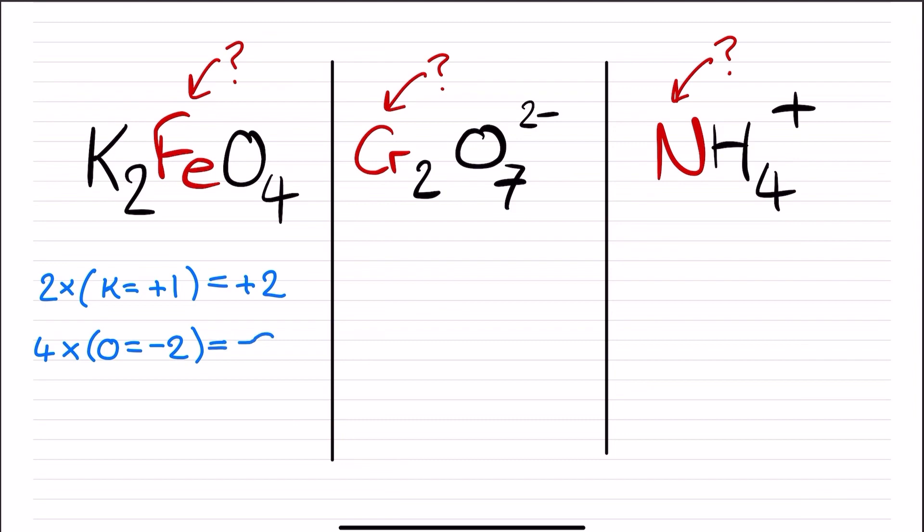Each oxygen is negative two, and there are four of them, so that contributes negative eight. This means the iron needs to bridge the gap between a subtotal of negative six and the total lack of an ionic charge on the compound, making the iron plus six.